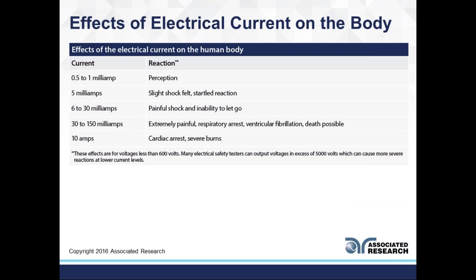Here are the effects of electrical current on the body. Anything less than half a milliamp, we're probably not going to perceive it. Once you get past the half to one milliamp range, that's when you start perceiving it — it almost feels like a vibration or buzz. Near the five milliamp range, you can feel a slight shock or a startled reaction, which can be dangerous if someone is on a ladder or near other live parts. In the six to thirty milliamp range, you start losing control of muscle functions — painful shock, inability to let go. At about twenty milliamps in a training demonstration, my fist was completely closed and I could not open it. Past thirty milliamps up to one hundred fifty milliamps, death is possible. Once in the amp range, it's cardiac arrest and severe burns.